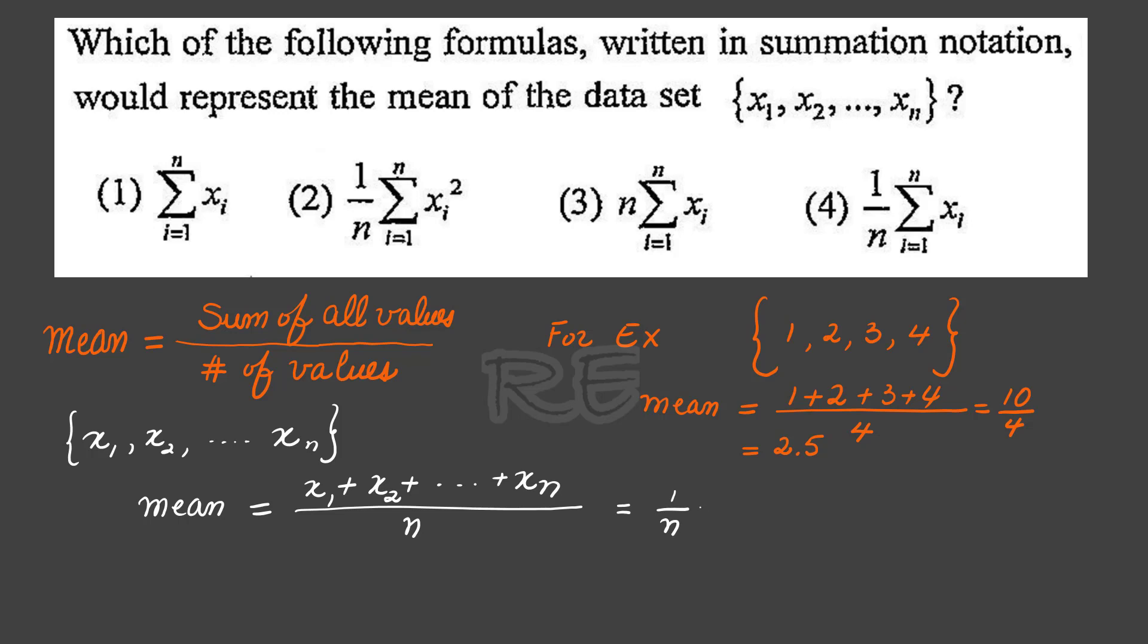Dividing by n is the same as multiplying by 1 over n, so it's 1 over n times x sub 1 plus x sub 2 plus all the way at the end, x sub n.